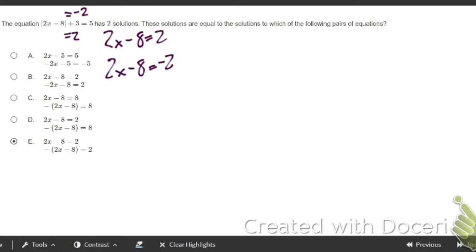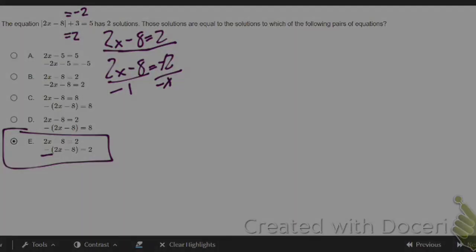Because they have 2x minus 8 equals 2, but then we have this 2x minus 8 and it does still say equals 2. But just imagine that you divide it by negative one on both sides, so it'll be like the negative one is on the outside there.